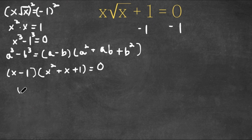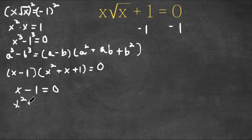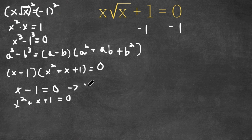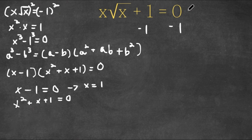Now this gives us two equations. We have x minus one is equal to zero, and x squared plus x plus one is equal to zero. Now for x minus one equals zero, this means that x is equal to one. However, if we plug in x equals one, we get one times the square root of one, which is simply one, plus one is equal to zero. Well, one plus one is two, so two is not equal to zero, so this is actually rejected.